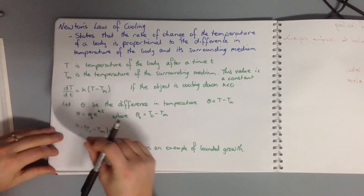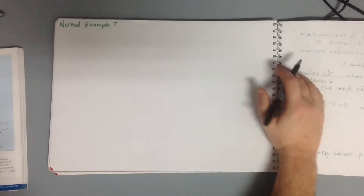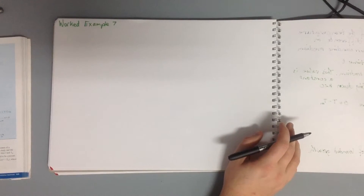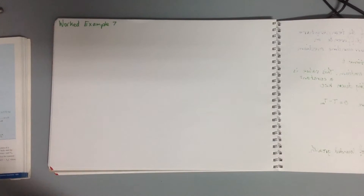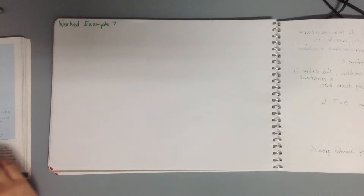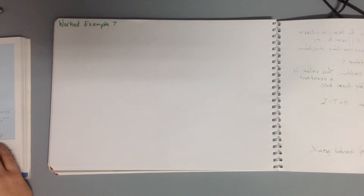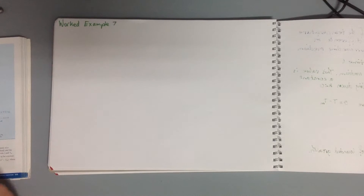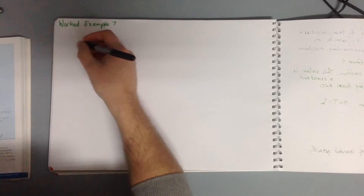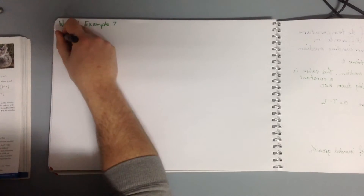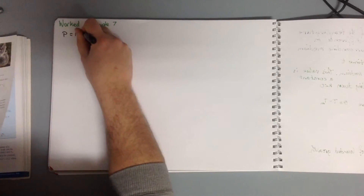We'll look at a couple of worked examples. Work example seven: the weight of medium-sized dogs follows a bounded growth model. The initial weight of a typical newborn puppy is 0.5 kilograms, and after 16 weeks its weight has increased to 4.5 kilograms. It is known the dog's weight will never exceed 15 kilograms. We need to determine the weight of the dog after one year. Our carrying capacity P is 15 kilograms.